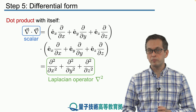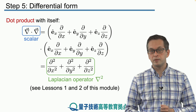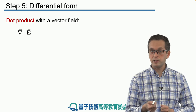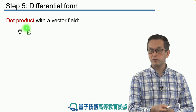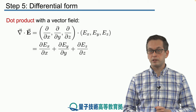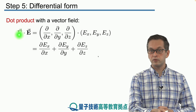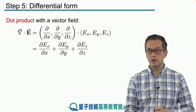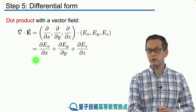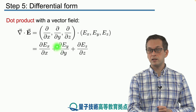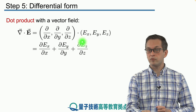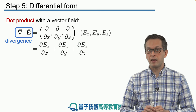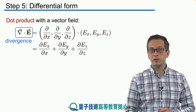Now we get to the main point: the dot product of the del operator with a different vector field. Taking the dot product of del with the electric field E, we get the following scalar expression: the partial derivative of Ex with respect to x, plus dEy/dy, plus dEz/dz. This expression appears everywhere in electromagnetic field theory and is known as the divergence.